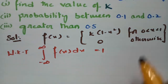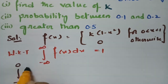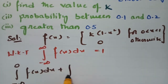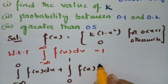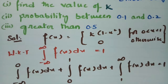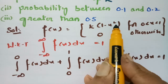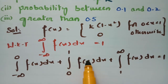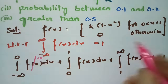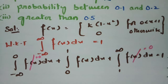We insert 0 and 1 as the boundaries within minus infinity to plus infinity, which gives us: integral from minus infinity to 0 of f(x) dx, plus integral from 0 to 1 of f(x) dx, plus integral from 1 to infinity of f(x) dx equals 1. Since f(x) = k(1 - x²) only between 0 and 1, and is 0 otherwise, the first and last integrals are 0.